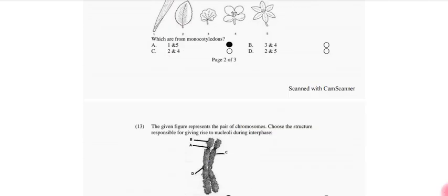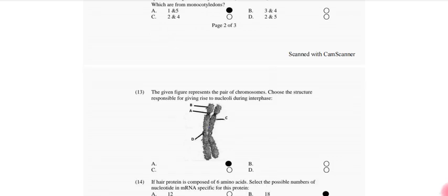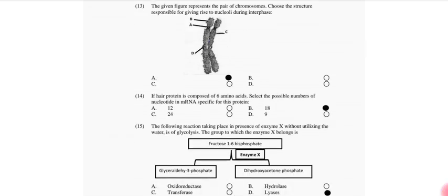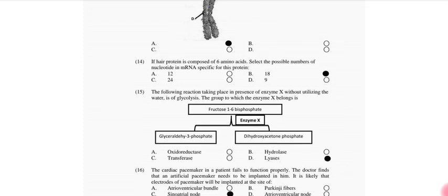Diagram shows leaves and flowers of different plants. Which are monocotyledons? So that is 1 and 5. The given figure represents a pair of chromosomes. Identify the structure responsible for giving rise to nucleolus during interphase. So that is the nucleolar organizer. If a protein is composed of 6 amino acids, select the possible number of nucleotides in messenger RNA specific for this protein. That is 18.